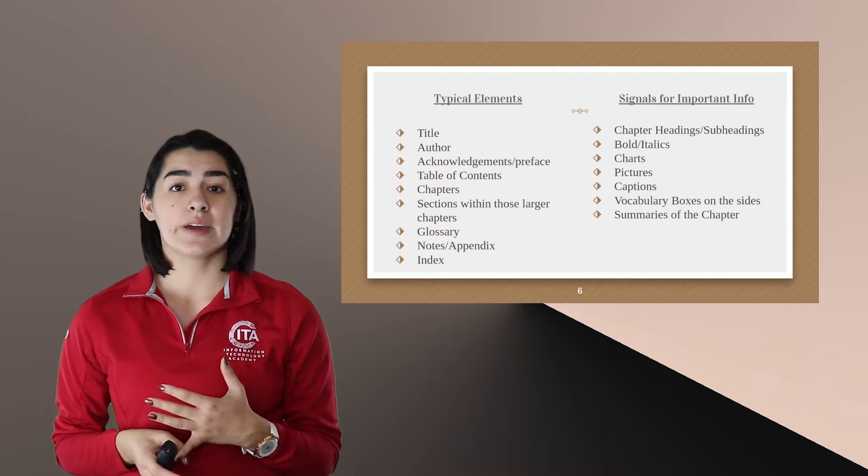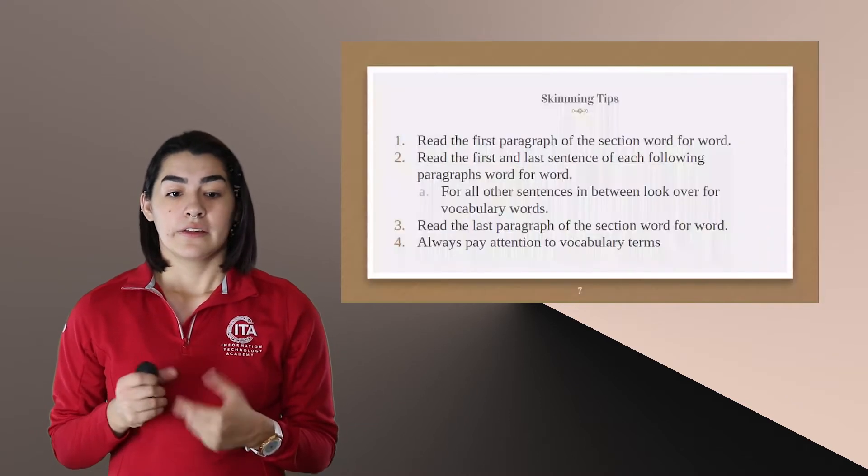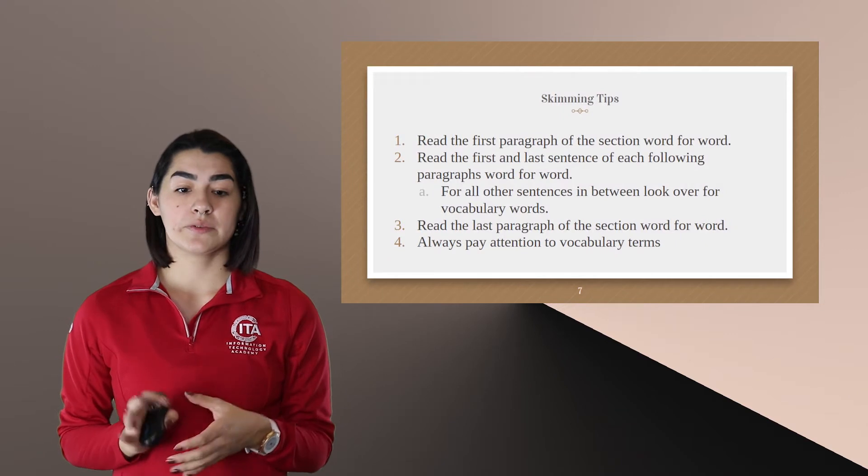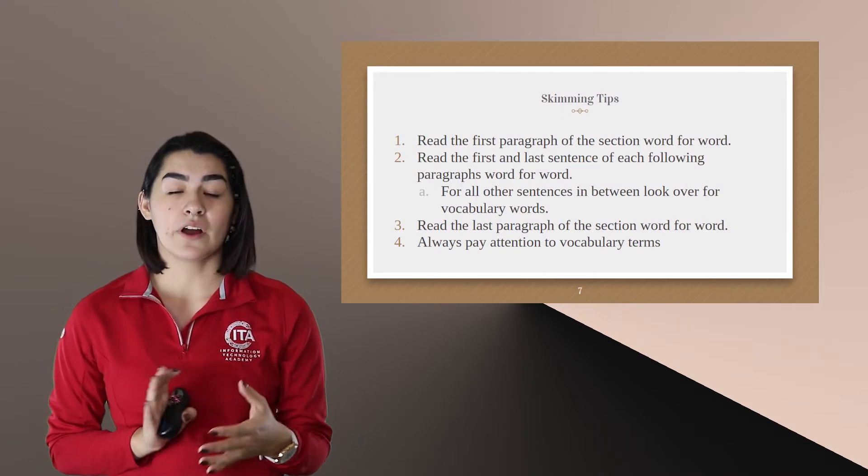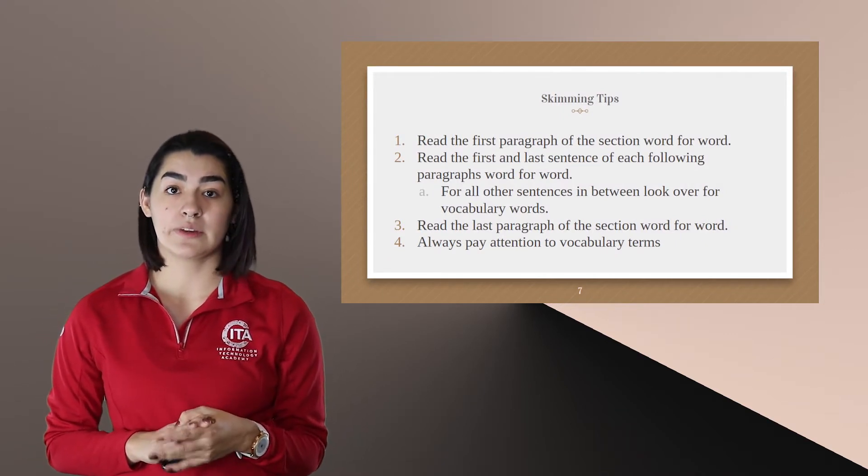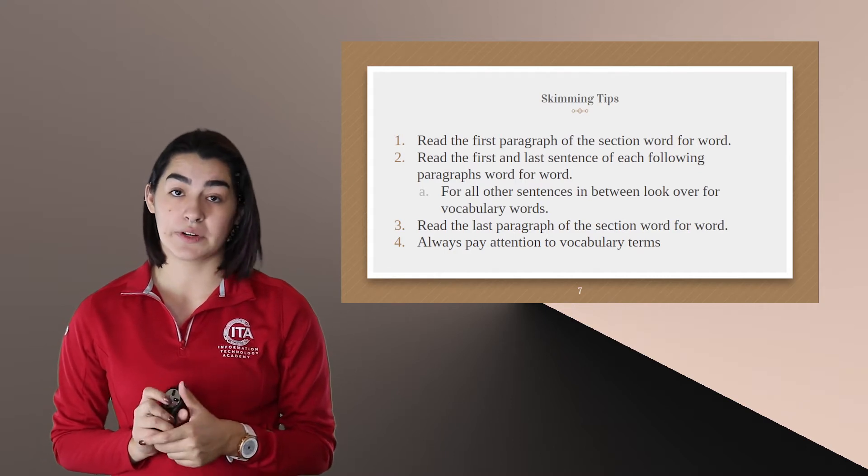I'm going to go over two ways to read a textbook. The first is skimming. So you're going to read the first paragraph of the section word for word. And then for all of the following paragraphs, you're going to only read the first and last sentence word for word.